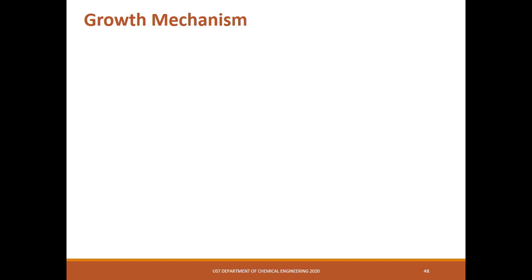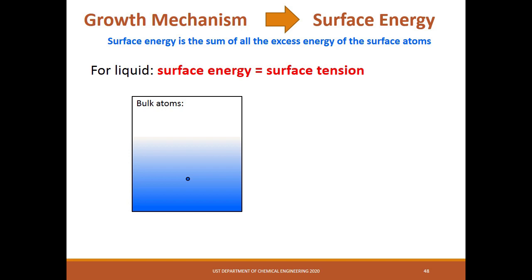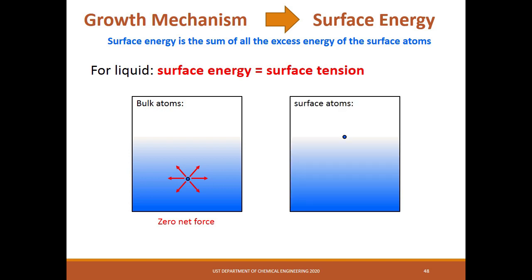In the bottom-up approach, nanoparticles grow due to the difference in surface energy. Surface energy is the sum of all the excess energy of the surface atoms. For liquids, the surface energy is also the surface tension. If we consider an atom in the bulk of the liquid, there is a zero net force since it is surrounded by other atoms. For surface atoms, since they are at the border, there will be a net attractive force pointing towards the solution, which we refer to as the surface tension.